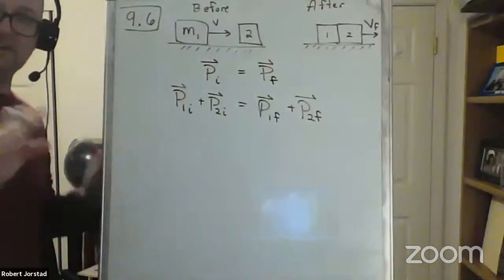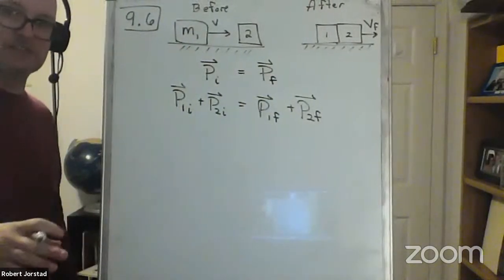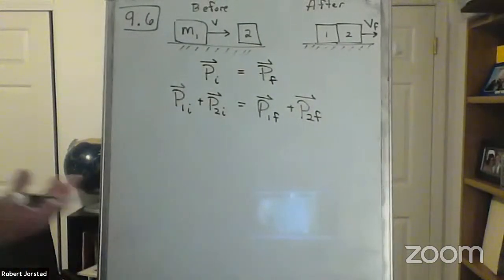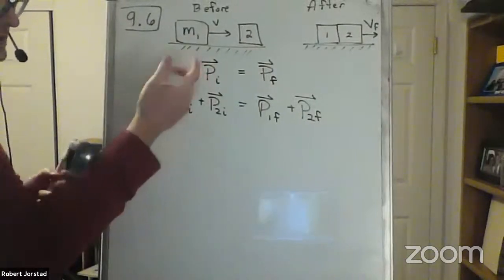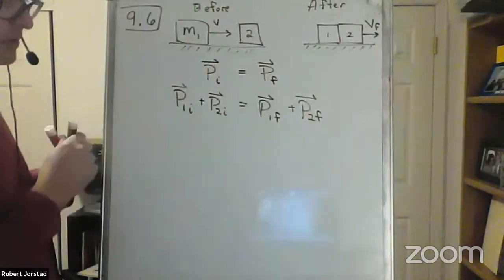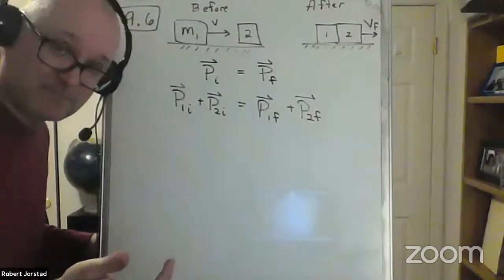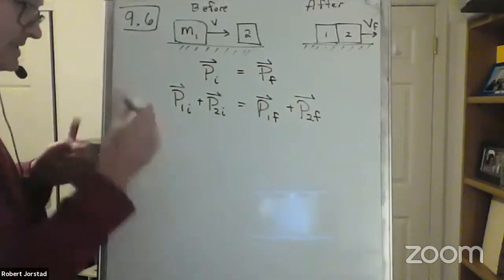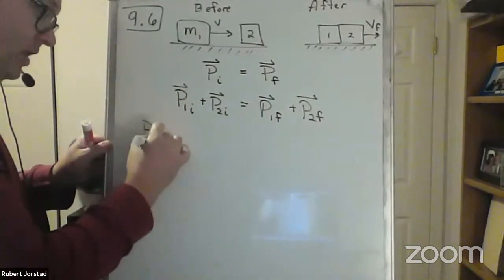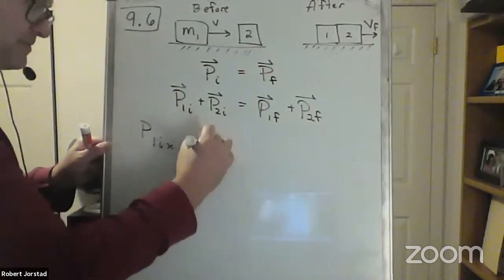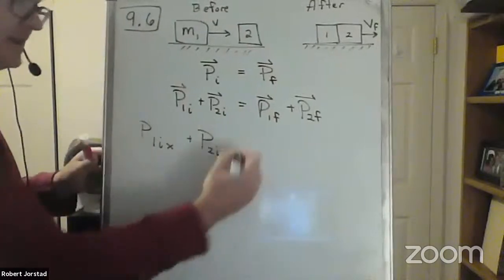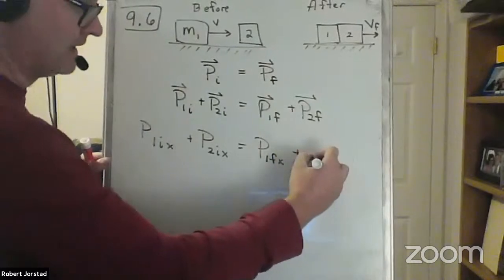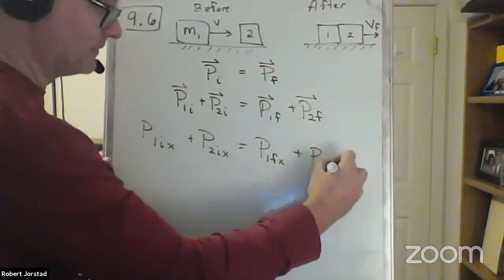I'm going to walk you through every little step. In this case, I don't need to worry about the y direction. So I'm going to simplify: P1 initial in x plus P2 initial in x should equal P1 final in x plus P2 final in x. Notice I dropped the vectors — just like in chapter two, we could have put an i-hat on every single term, but if it appears on every term, we cancel it immediately.